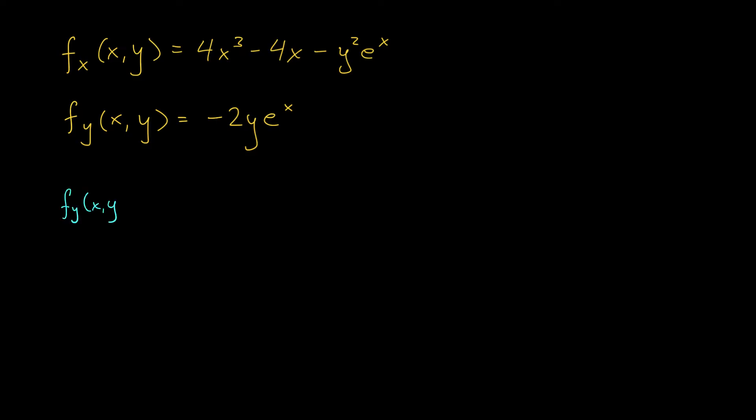So starting with the equation fy is equal to zero, we see that minus 2y e to the x has to be zero. But hold on a second. E to the x is always positive. It's always above the x axis. So it can never be zero. If this product is equal to zero, it must mean that y is equal to zero.